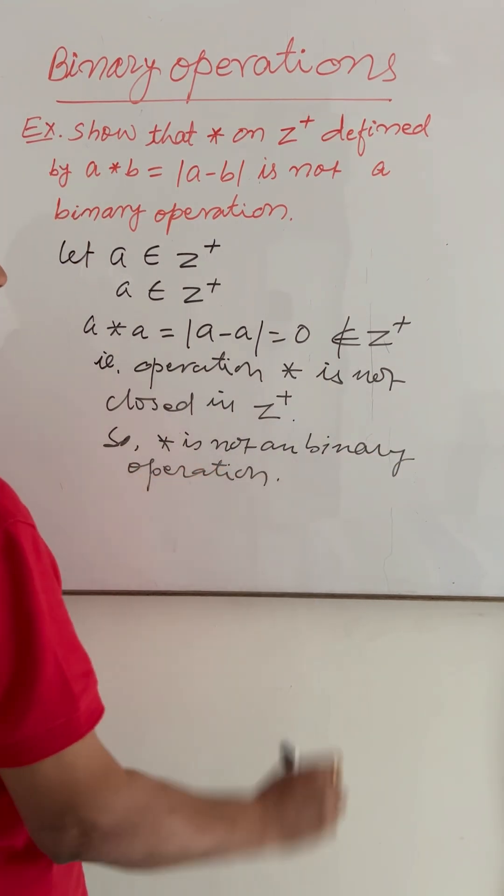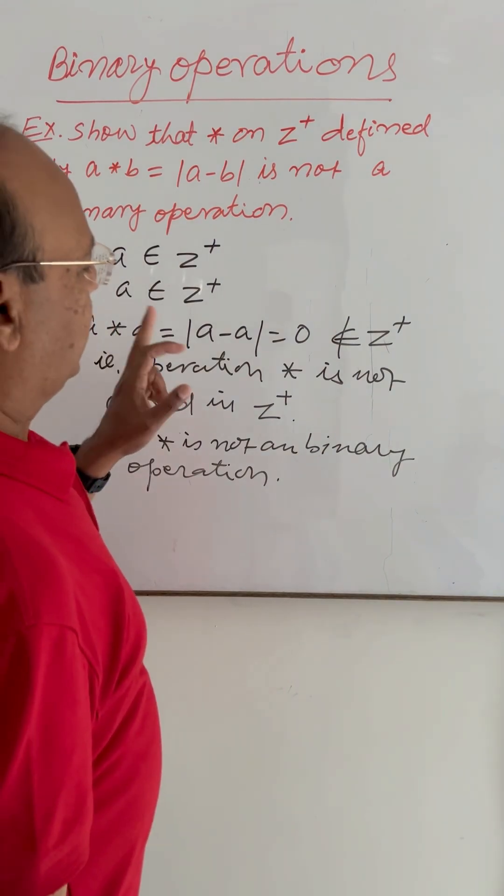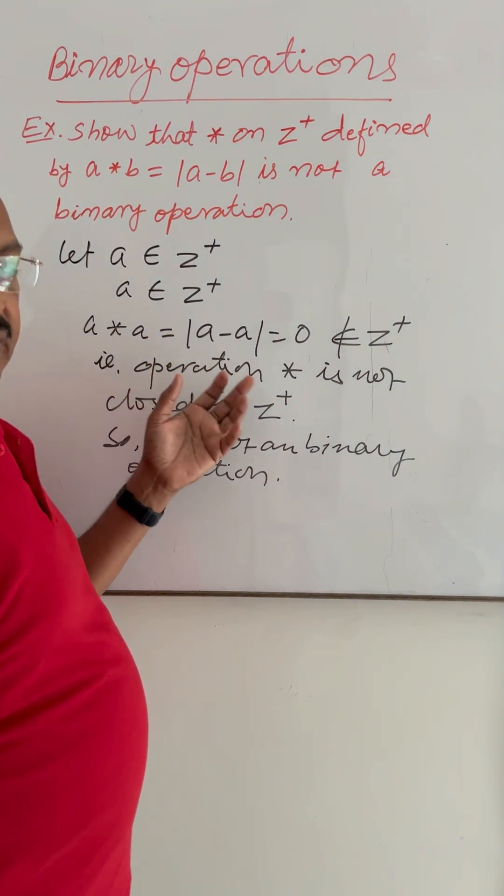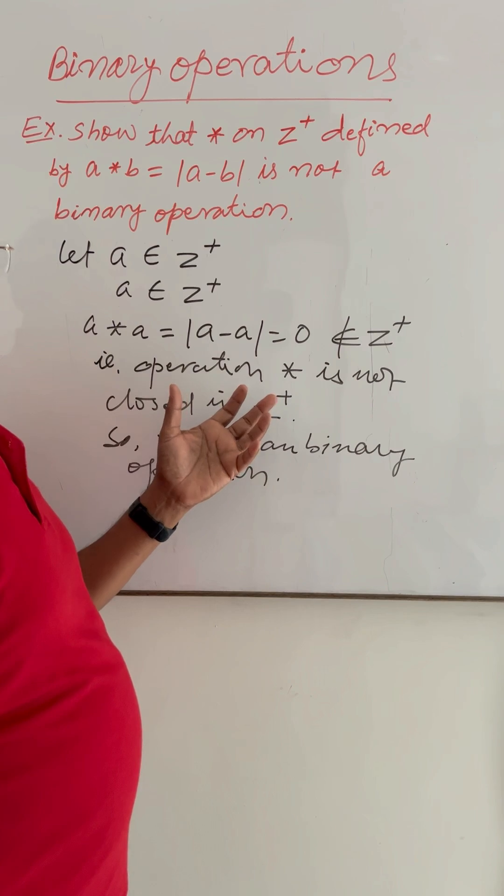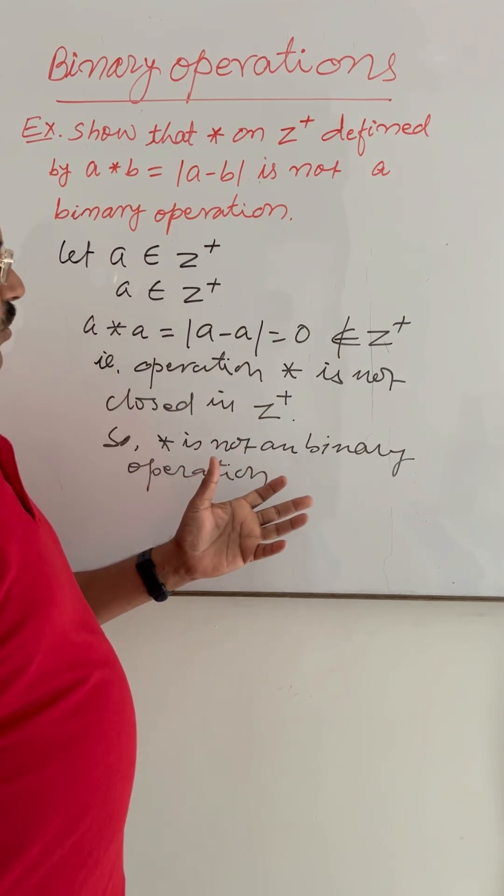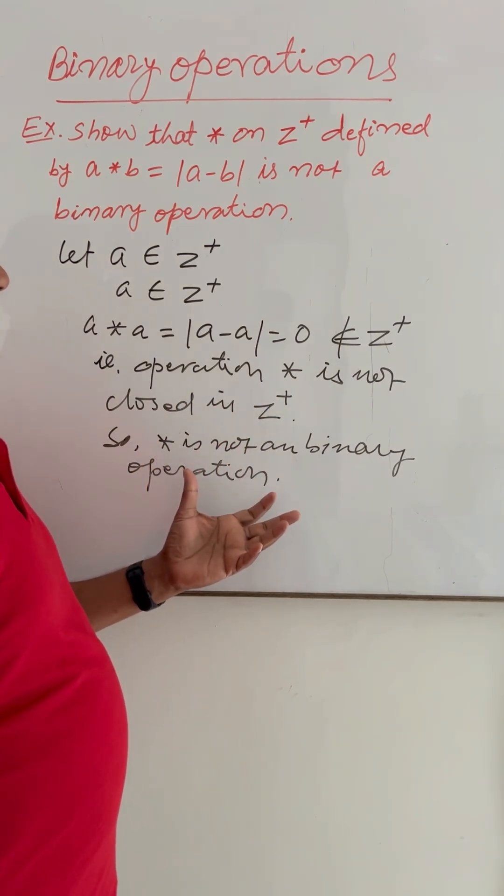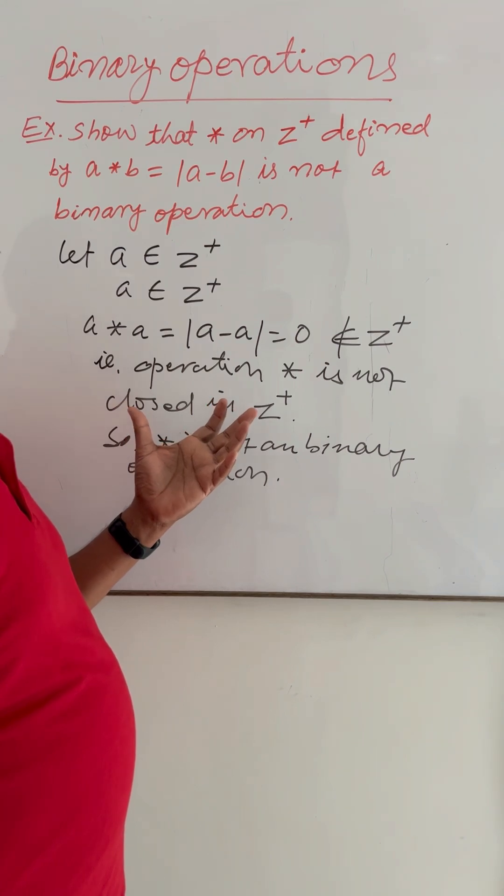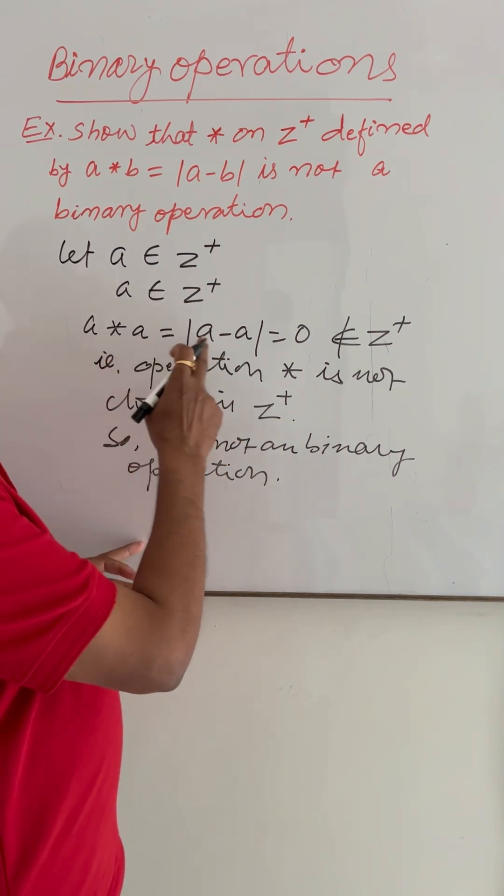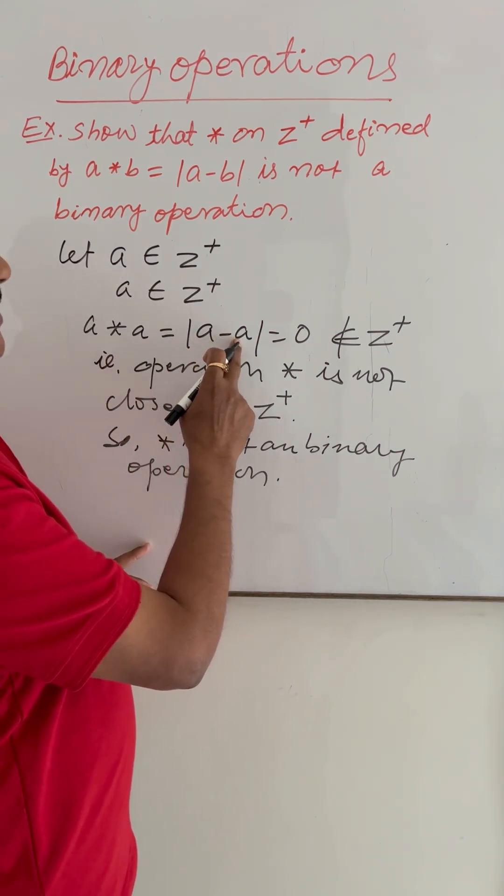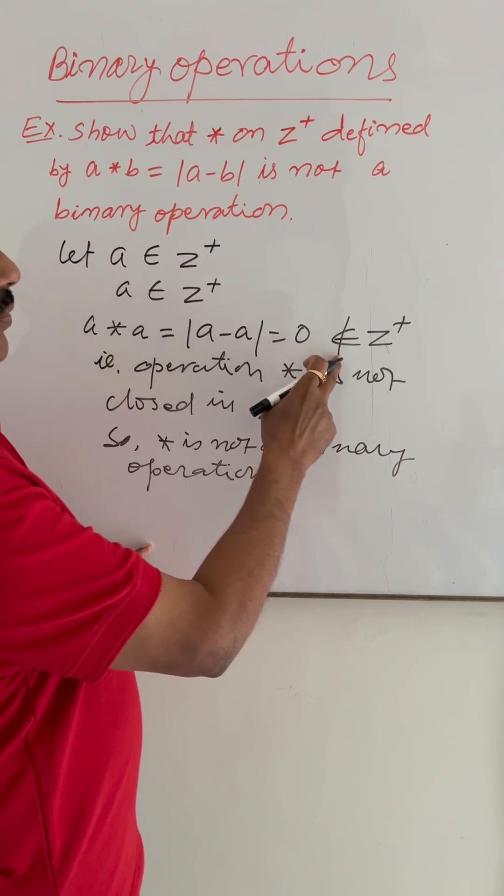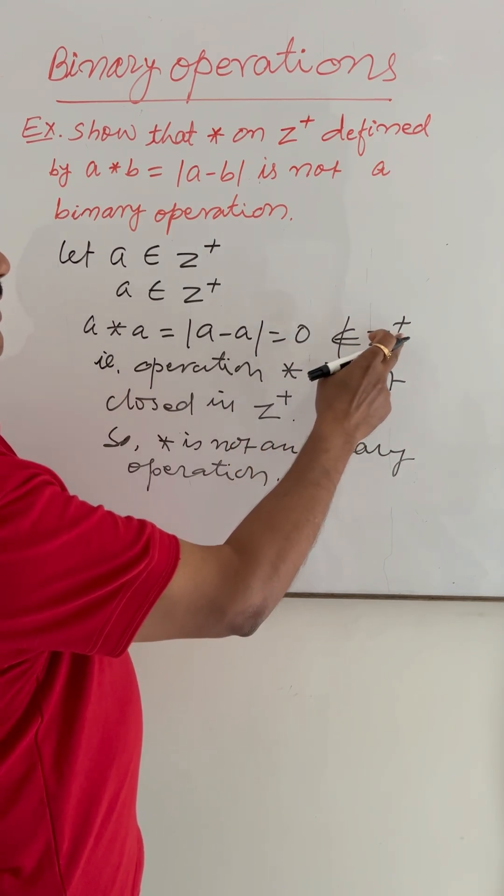Because as we know that binary operation must be closed in the given set. This is not closed, so this is not a binary operation. And why this is not closed? Because a operation a, that is mod of a minus a equals zero, will not belong to Z plus.